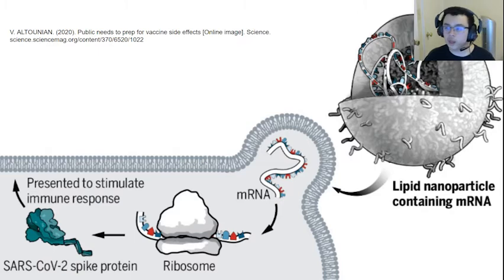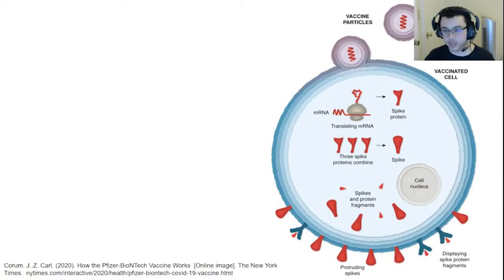So it takes this foreign mRNA from the vaccine and translates it into a protein. This protein is the coronavirus spike protein, and the cell begins to display it on the outside of the cell, on its membrane.